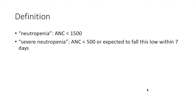Neutropenia is defined typically as an ANC under 1500. Severe neutropenia is an ANC under 500, or if you're expecting it to fall that low within the next seven days. I'm not an oncologist and wouldn't necessarily know how to predict when it's going to fall that low, but that's in the definition too.